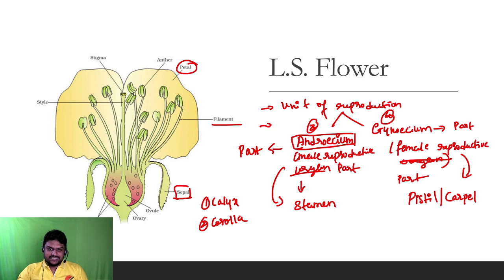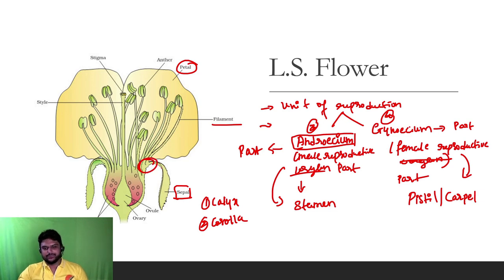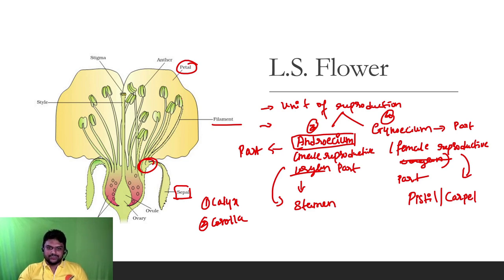The stamen has two parts. The first one is the filament — it is the long, slender part attached to the thalamus. The other end is attached to the anther, which contains pollen grains.